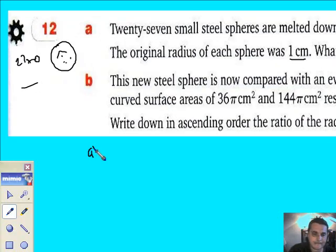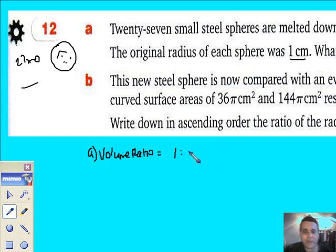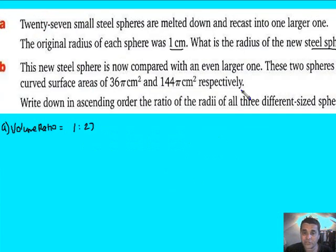So for part A, I'm going to say volume ratio. It's going to be one—the little one—one volume of ball bearing to 27 lots. I know that because the new one is made from 27 of the little ones. That's the volume ratio.